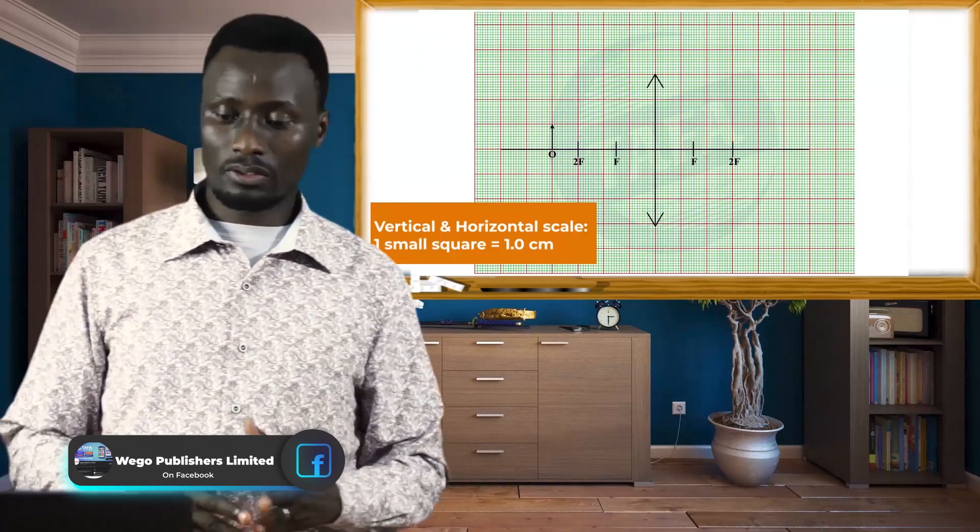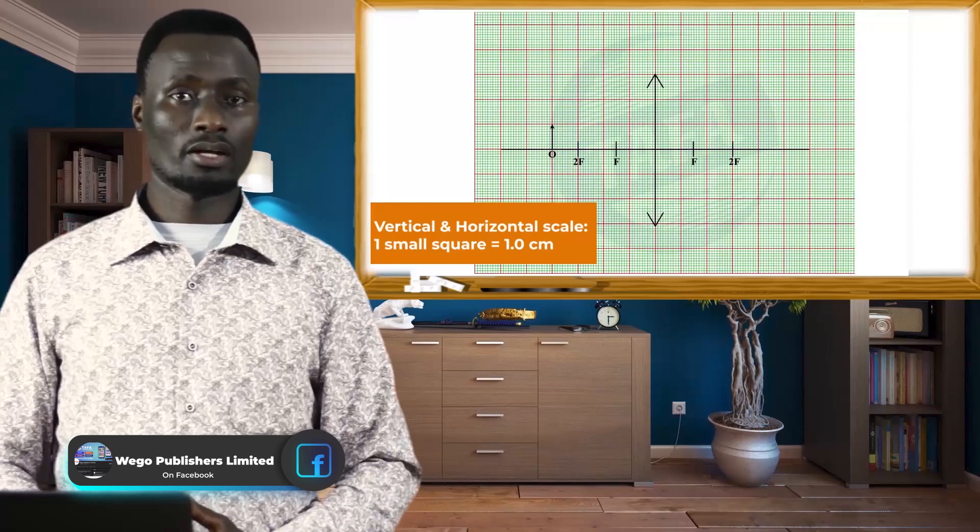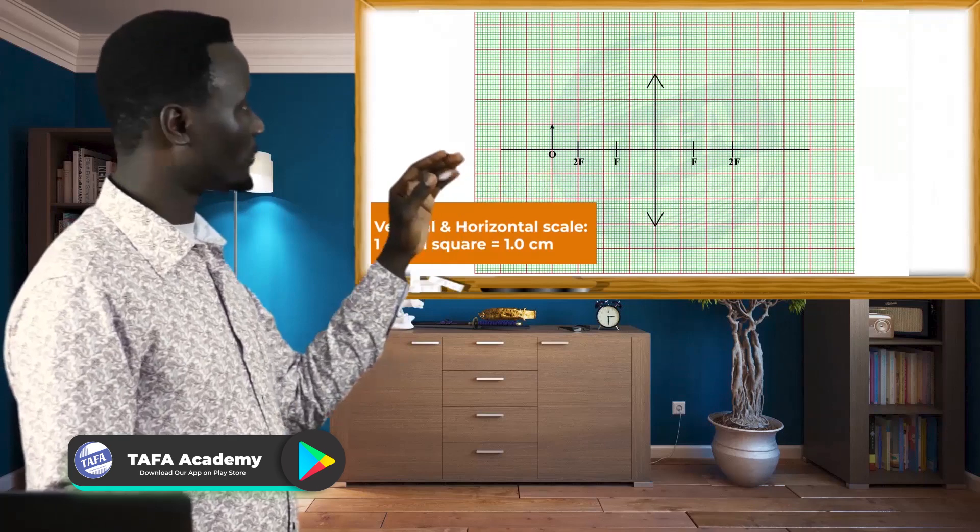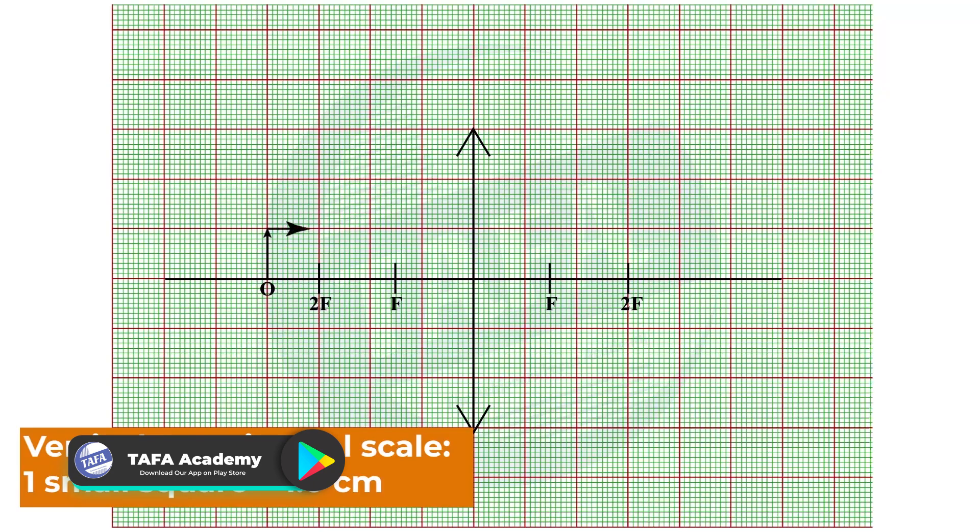And then we now need to draw the rays. The first ray we are going to draw is a ray parallel to the principal axis.